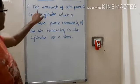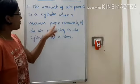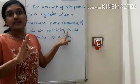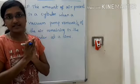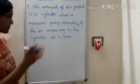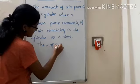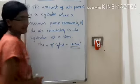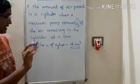Problem: The amount of air present in a cylinder when a vacuum pump removes 1/4th of the remaining air each time. Assume the volume is 16 cm³. Each time, 1/4th of the air is removed.